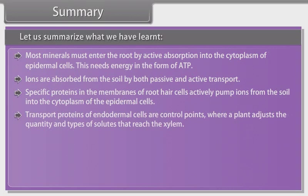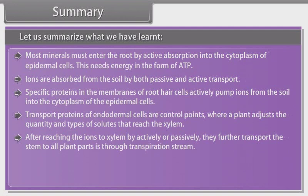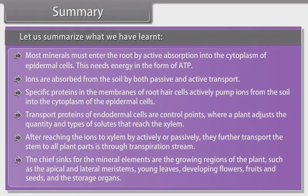Transport proteins of endodermal cells are control points where a plant adjusts the quantity and types of solutes that reach the xylem. After the ions reach the xylem, actively or passively, their further transport up the stem to all plant parts is through the transpiration stream. The chief sinks for the mineral elements are the growing regions, such as the apical and lateral meristems, young leaves, developing flowers, fruits and seeds, and the storage organs.